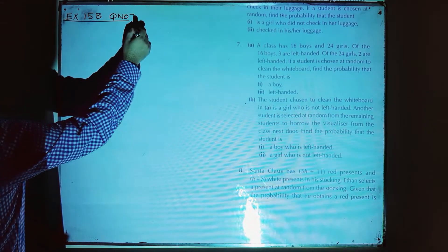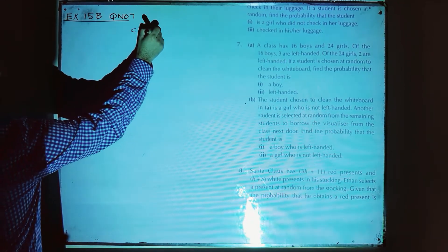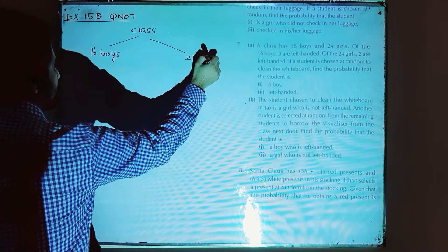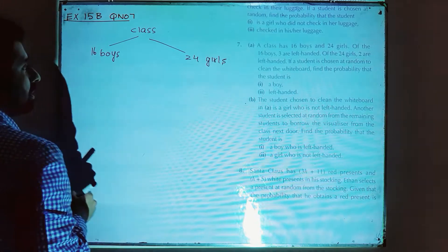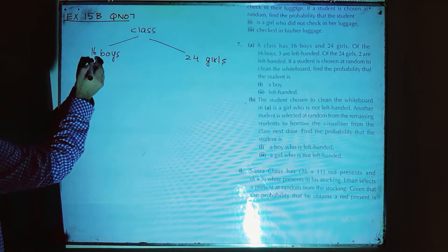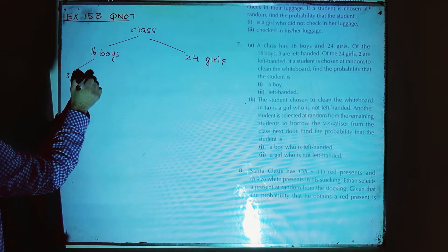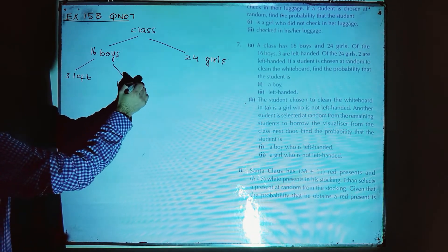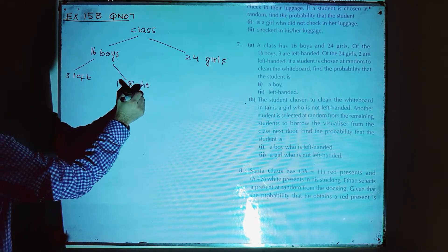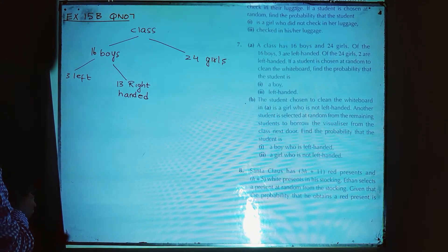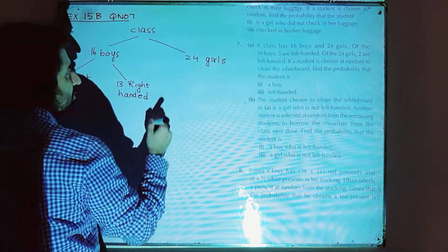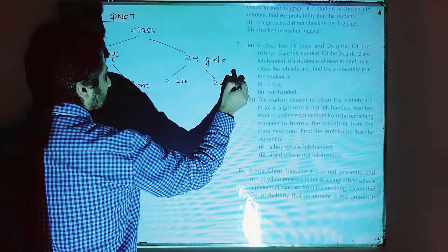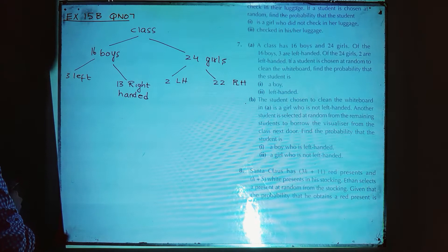24 girls. So we have a class in which we have 16 boys and 24 girls. Of the 16 boys, 3 are left-handed, so obviously 13 are right-handed. Of the 24 girls, 2 are left-handed, then 22 are right-handed.